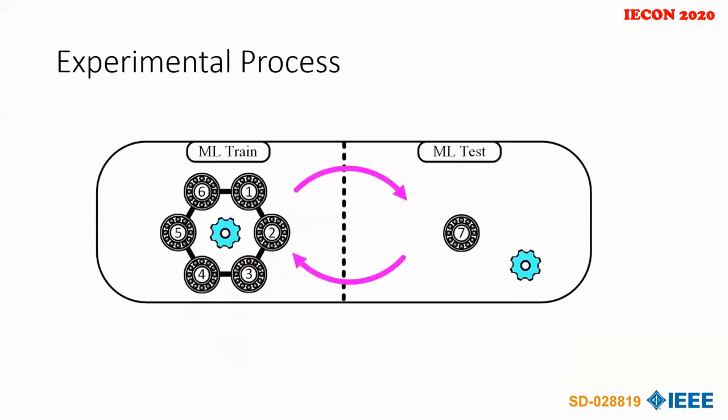All seven bearing test cases were used in a round robin formation, where six bearing signals were used to train the machine learning method, and the seventh was used for testing. Once remaining useful life estimations had been obtained for each of these outer sample test signals, the bearing was added back into the training pool and the next sequential bearing was transferred to the testing pool. The model was retrained and this was repeated for all seven test cases.